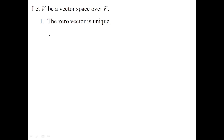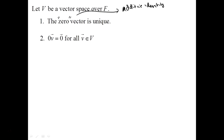Next, some properties of vector spaces. First: the zero vector — the additive identity — is unique. You can't have two elements that you add to any random vector and get that vector back; it must be a single unique element. Second: scaling any vector by the scalar zero gives you the zero vector, the additive identity.